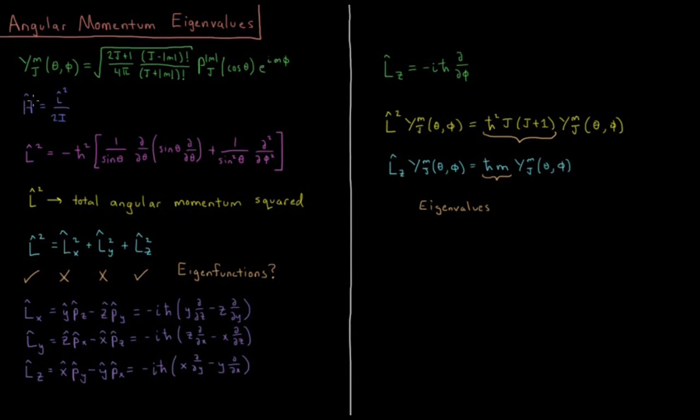Our Hamiltonian operator is just kinetic energy. Our potential energy is 0. So in angular terms, our kinetic energy is equal to angular momentum squared over 2 times the moment of inertia, represented by the angular momentum operator squared.